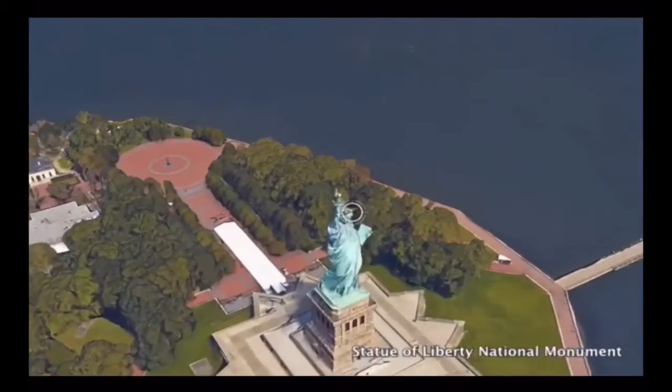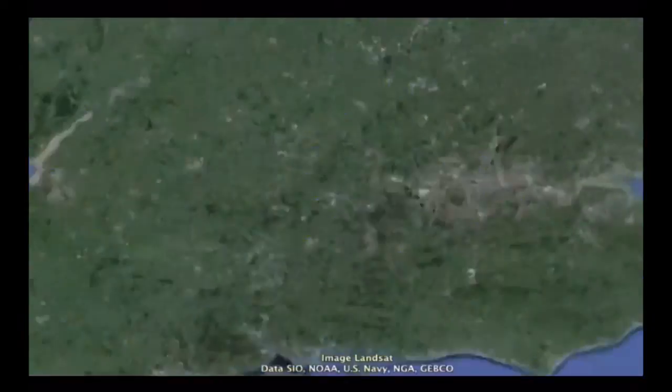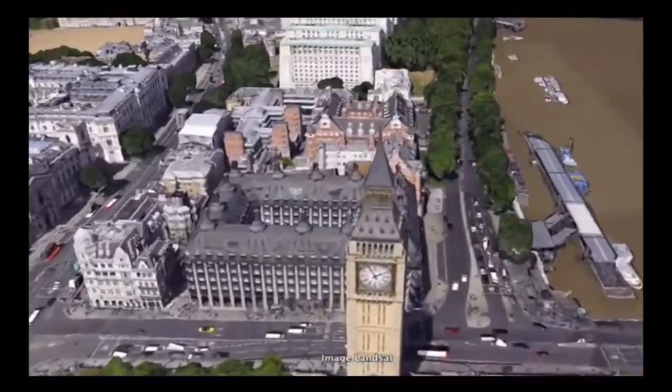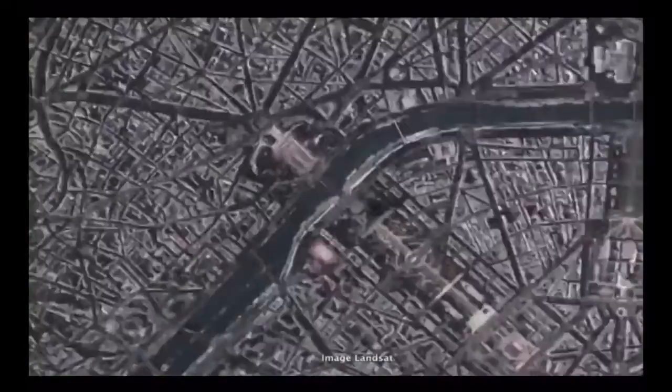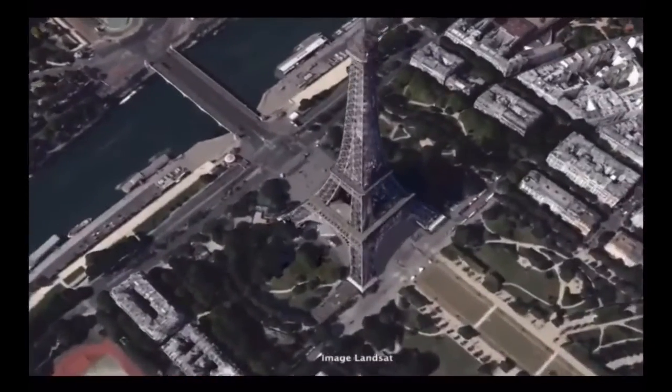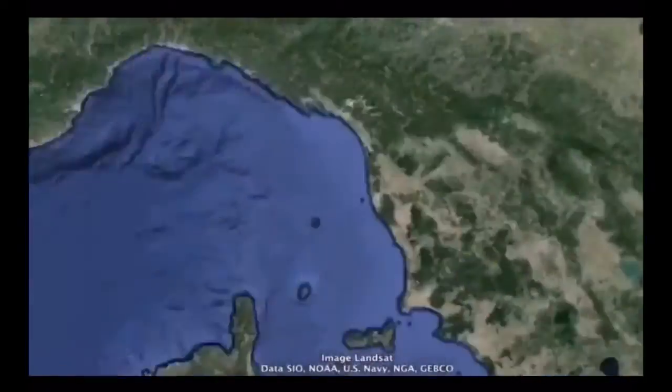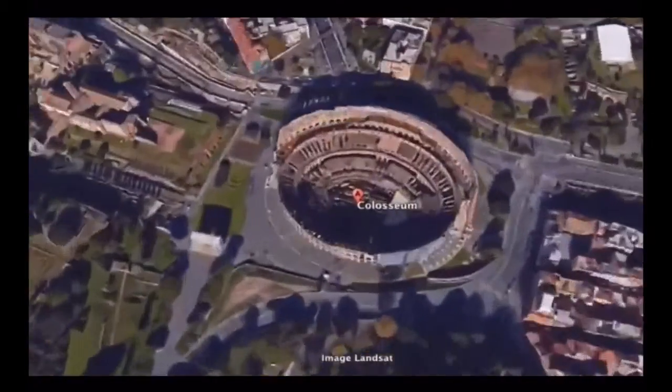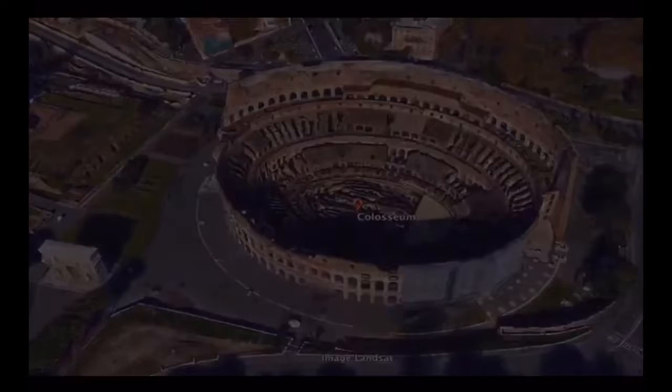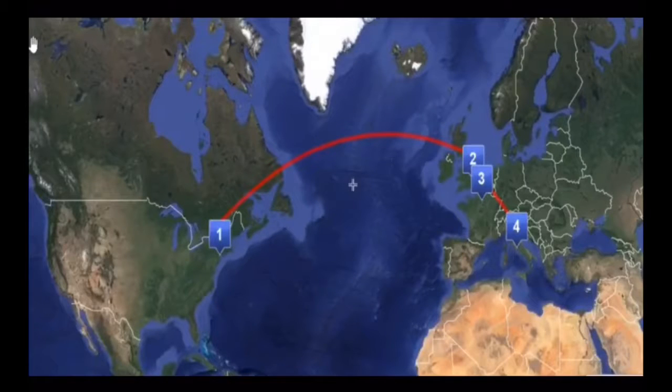We'll start with the Statue of Liberty in the U.S., go to Big Ben in London, the Eiffel Tower in France, and finish at the Colosseum in Italy. As we move along this route, we'll take the key ideas from each stage and attach them to these locations. Let's get started.